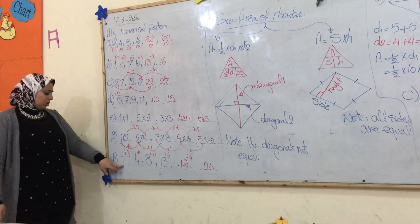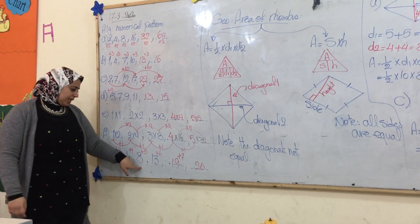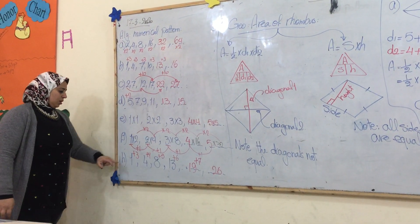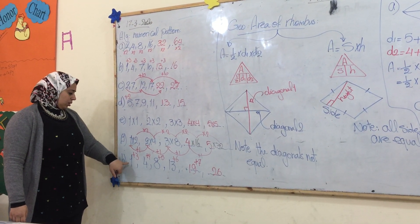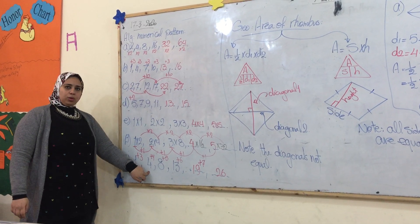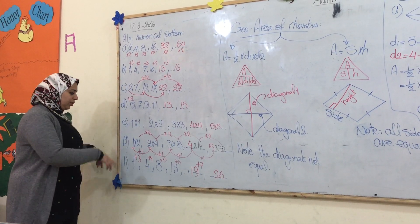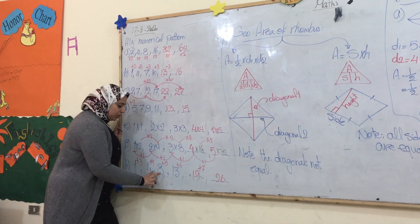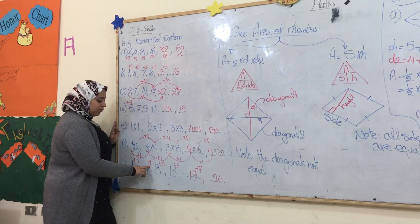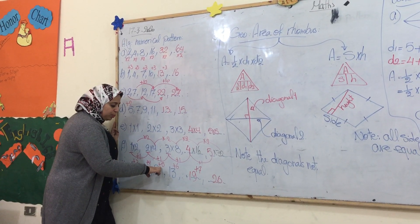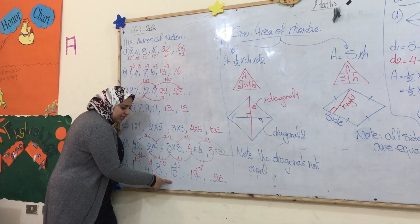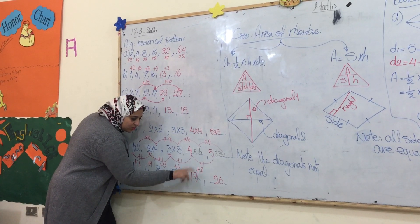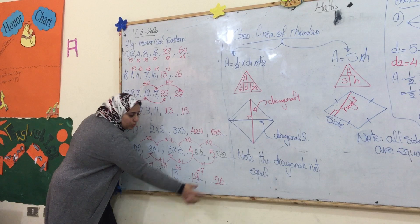The last question. Here: 1 becomes 4, 4 becomes 8, 8 becomes 13, 13 becomes something. Each time we increase the number that we add to get the next result. 1 plus 3 equals 4, 4 plus 4 equals 8, 8 plus 5 equals 13, 13 plus 6 equals 19, 19 plus 7 equals 26.